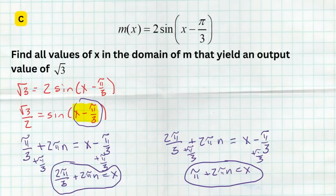If you only wanted answers from 0 to 2π, you wouldn't need the 2πn. The 2πn is added to represent the infinite co-terminal angles where you'd have that output value of √3/2. A lot of students struggle with these types of problems, so be very careful.